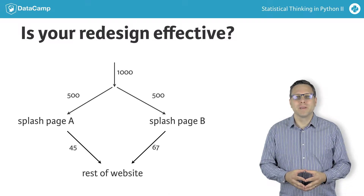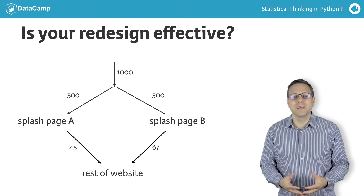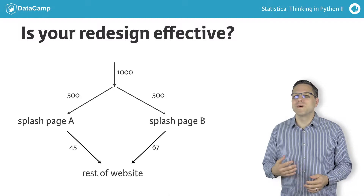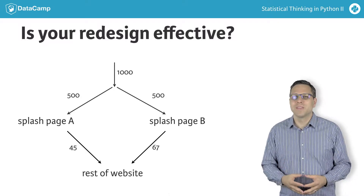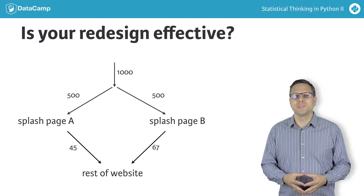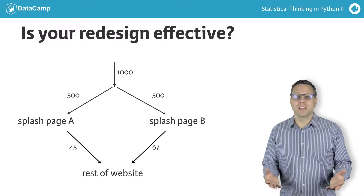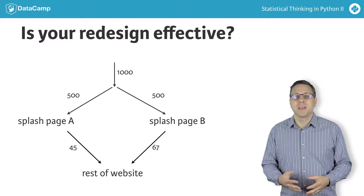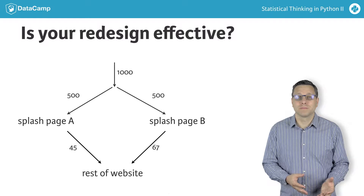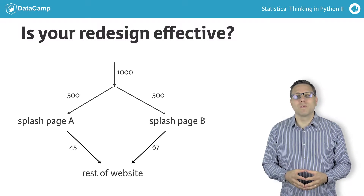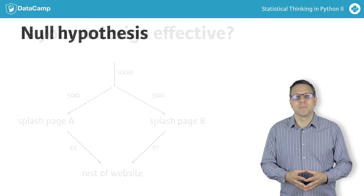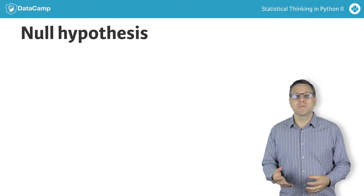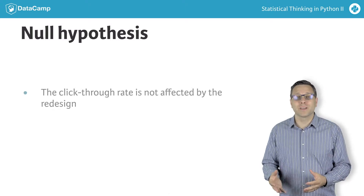This makes you happy because it is almost a 50% increase in the click-through rate. But maybe there really is no difference between the effect of the two designs, and the difference you saw is due to random chance. You want to check: what is the probability that you would observe at least the observed difference in number of clicks through if that were the case? This is exactly the question you can address with a hypothesis test. A permutation test is a good choice here because you can simulate the result as if the redesign had no effect on the click-through rate.